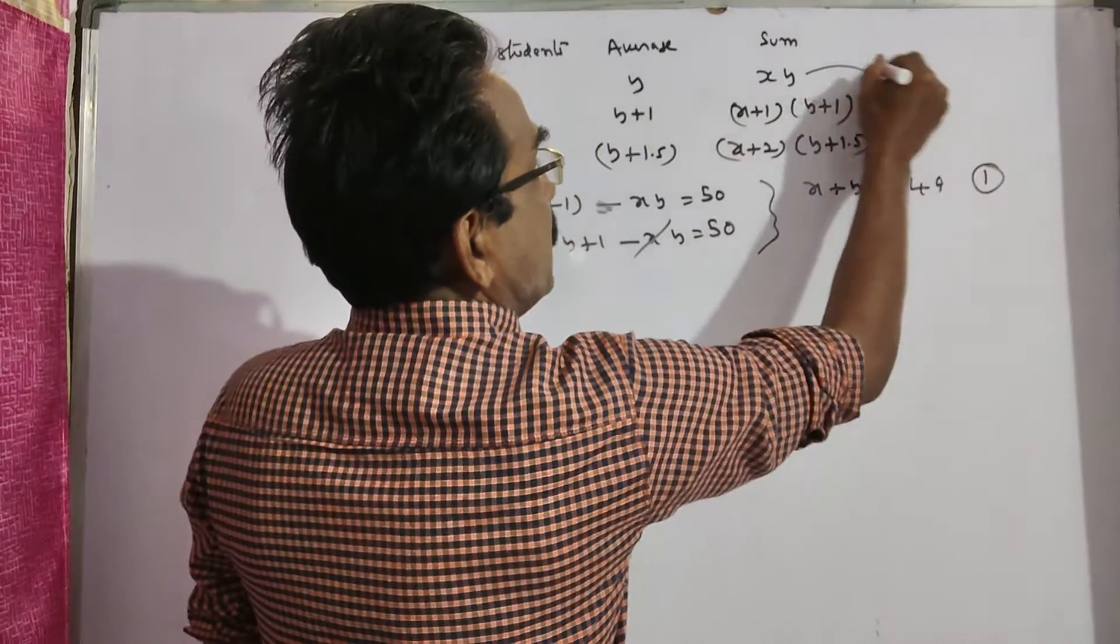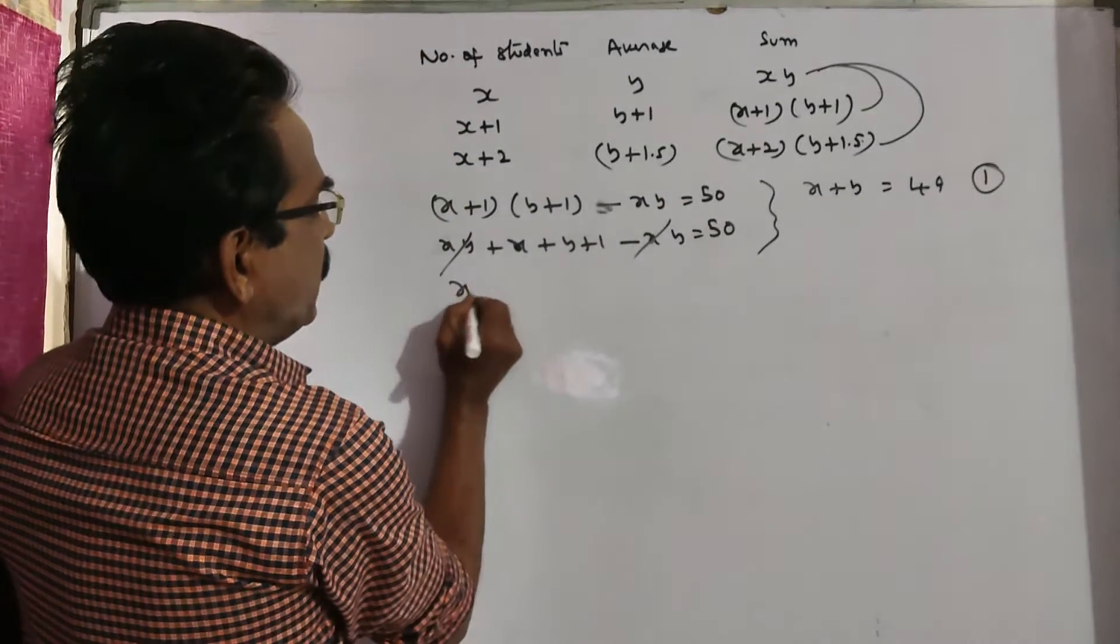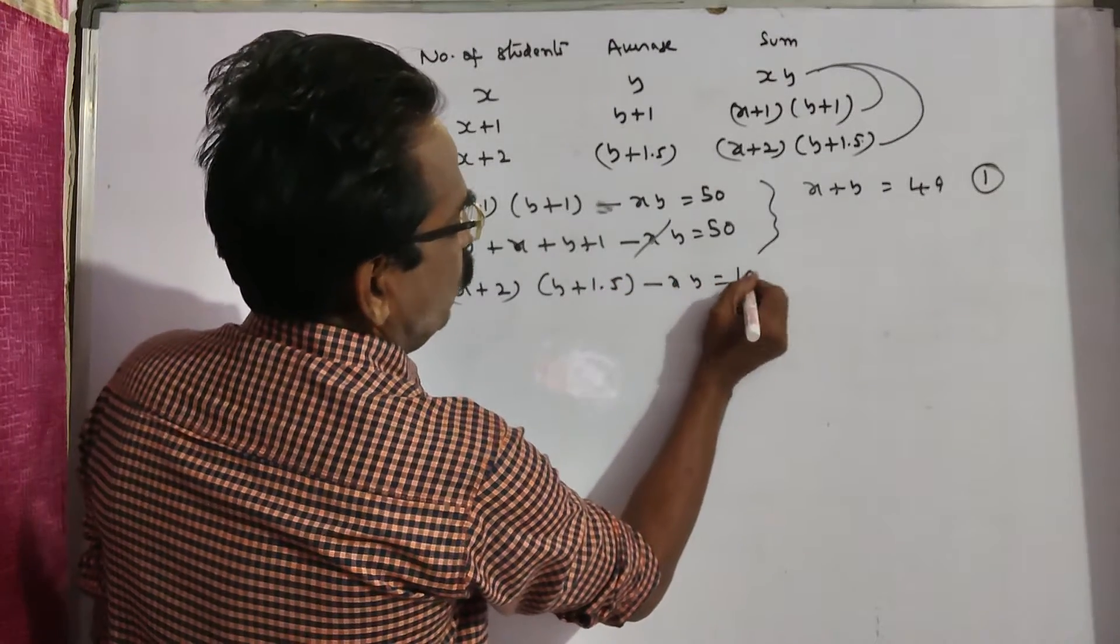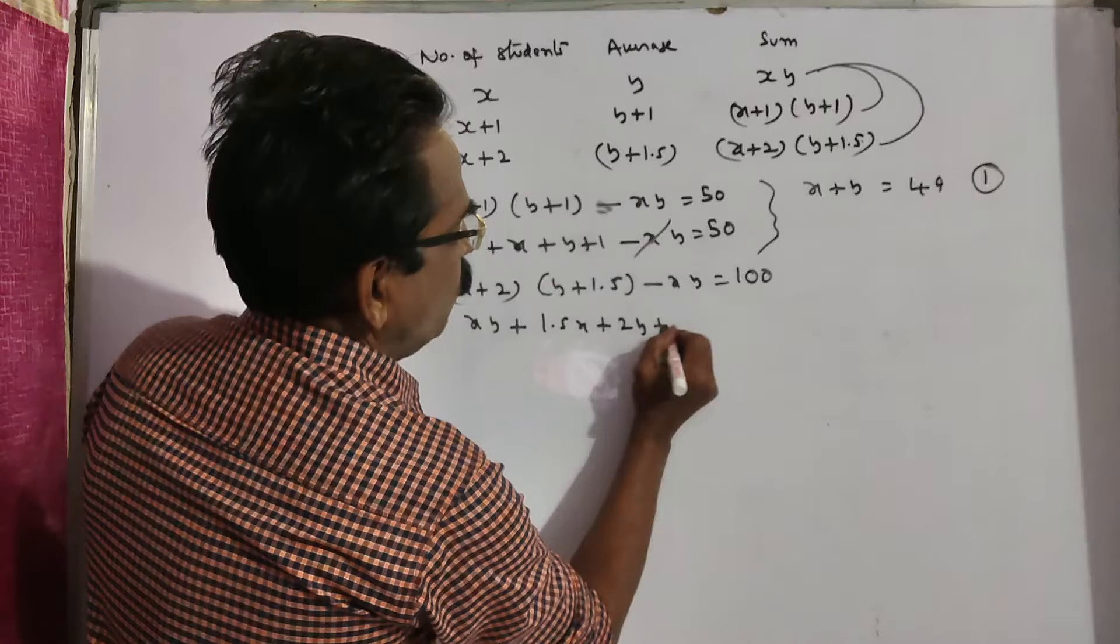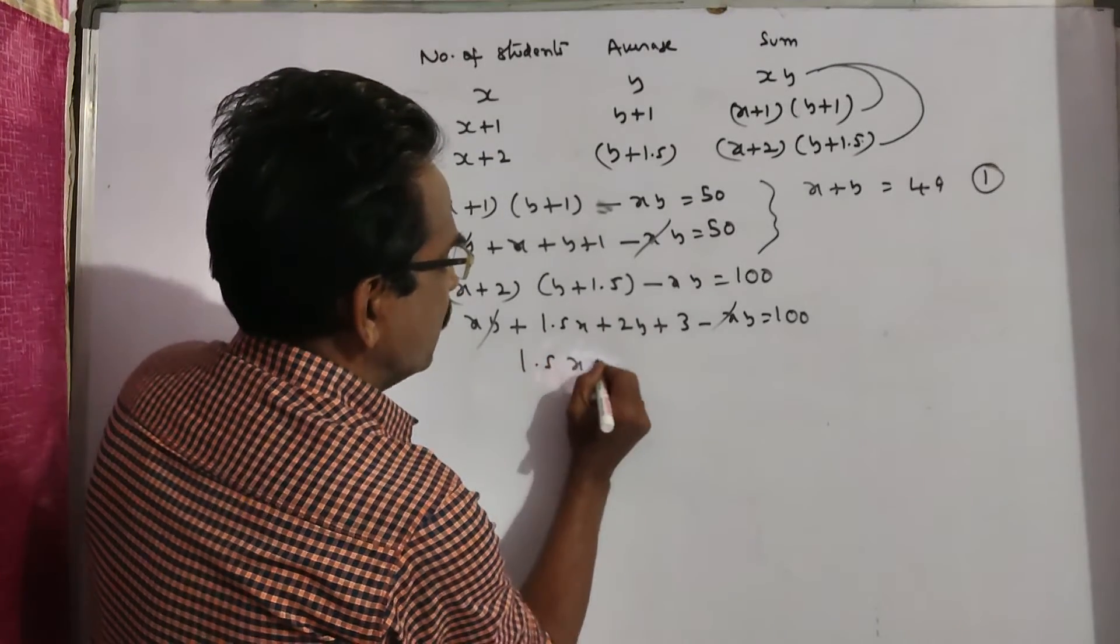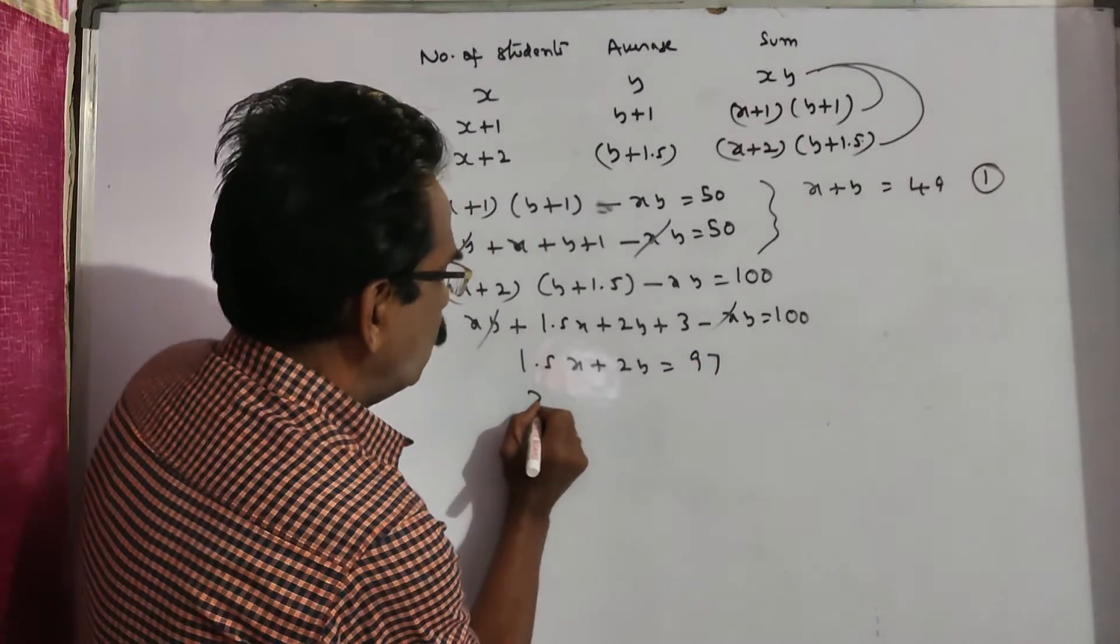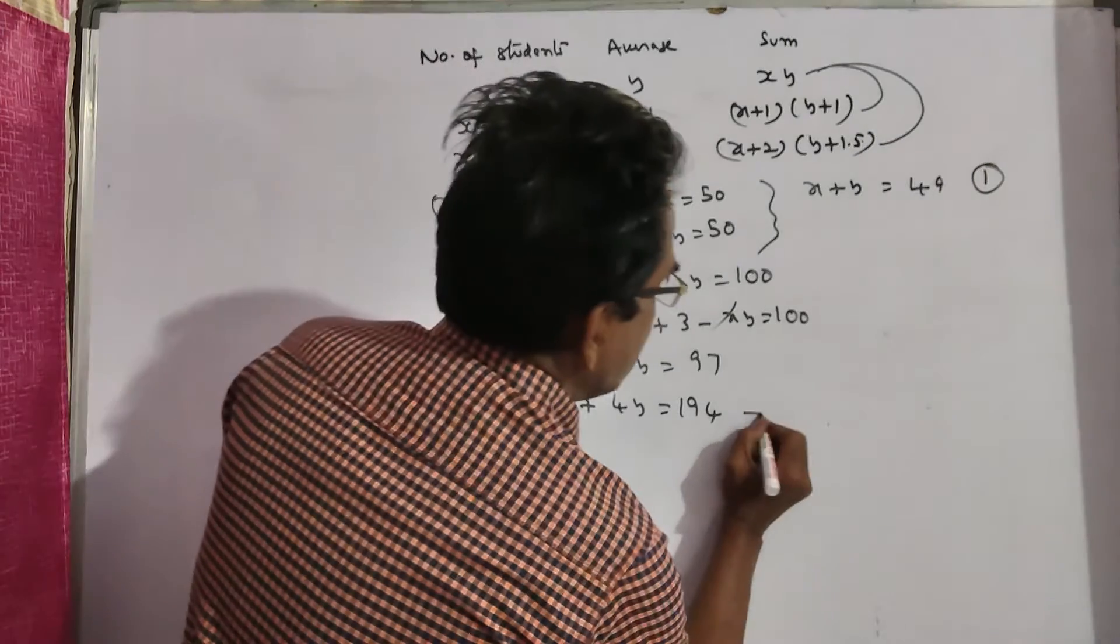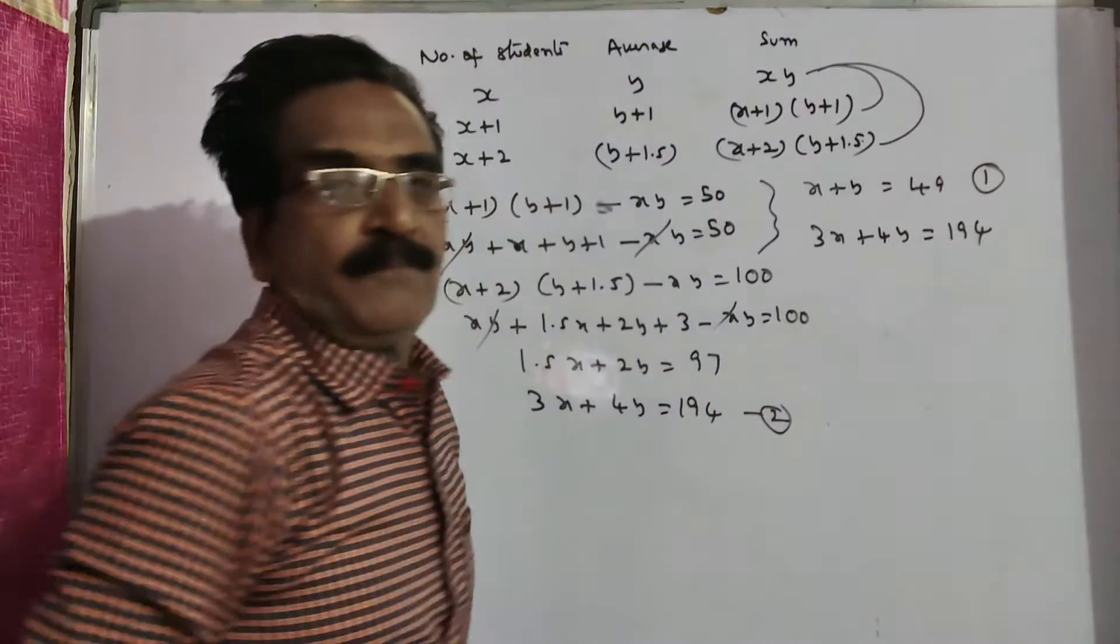And now this minus this is 100 because two students of 50 kg joined. So x plus 2 into y plus 1.5 minus xy is equal to 100. xy cancels. 1.5x plus 2y is equal to 100 minus 3, 97. Let us multiply this equation with 2: 3x plus 4y is equal to 194. This is equation 2.